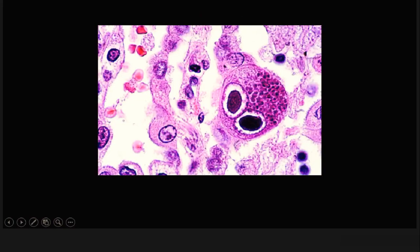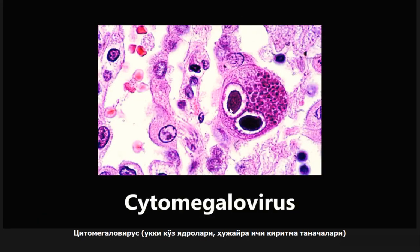This next one is an example of cytomegalovirus. What we're looking at here are these owl eye nuclei within the cell — these are intranuclear inclusion bodies. When you see this, you want to start thinking about cytomegalovirus. There's so much to talk about with CMV, but the key histological finding is the owl eye nuclei.